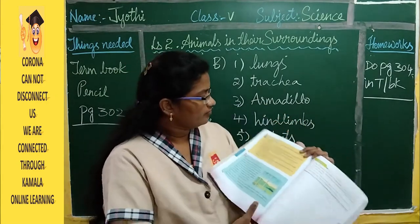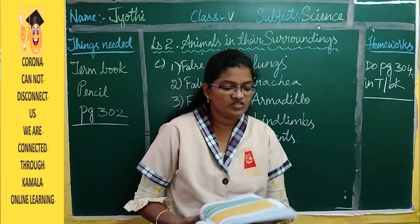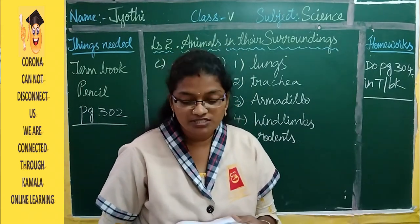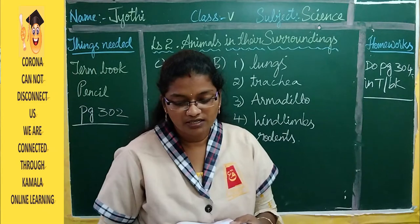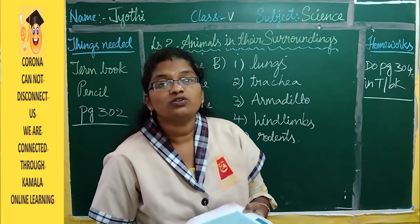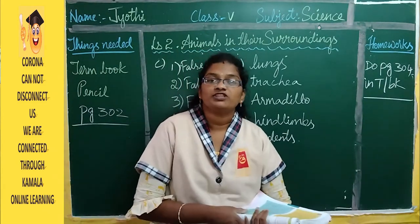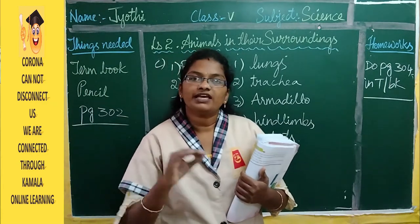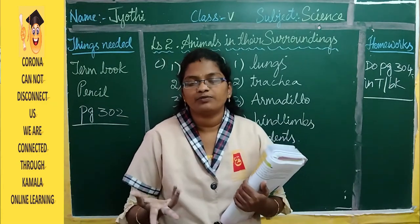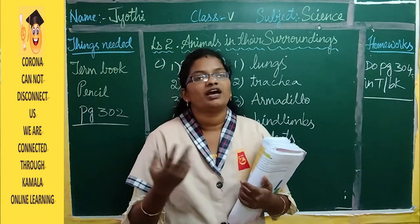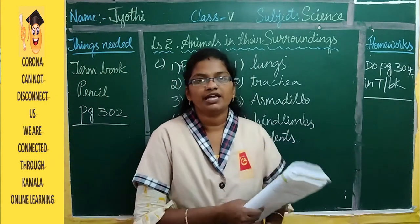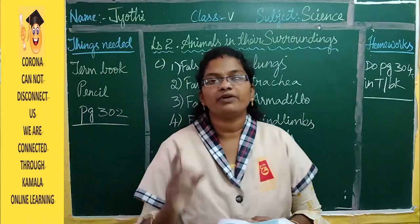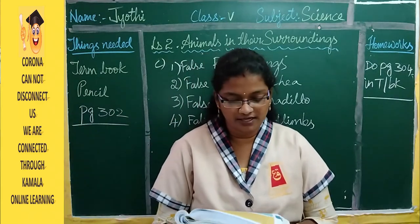Think and Answer: A sparrow can fly while an ostrich cannot — what enables a sparrow to fly? Both are birds, but an ostrich cannot fly because of its heavy body. A sparrow has a very light body, which enables it to fly. Frame the answer in a sentence and write it.